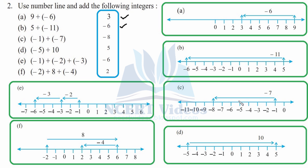One, two, three, four, five, six, seven — you reach at minus eight. Part d: minus five and ten. Initial position is at minus five. We will count ten, that is plus ten towards the right side of the number line: one, two, three, four, five, six, seven, eight, nine, ten. You reach at five, therefore the answer is five.